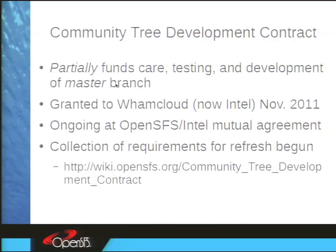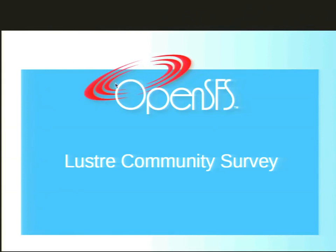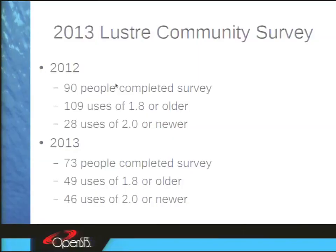Another thing we do to find out what people want from Lustre is the Lustre Community Survey — thanks to Peter Jones for doing that this year. Last year 90 people completed the survey; this year 73, with 109 summarized responses. Some people use multiple versions and can tag multiple versions in the survey. There were 109 uses of 1.8 in 2012 and 28 uses of 2.0 or newer. In 2013 it's much more even — 1.8 usage is clearly dropping and 2.0 and newer is taking off.